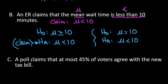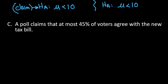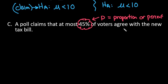Alright, so one last example. The last one talks about a poll claims that at most 45% of voters agree with the new tax bill. Okay, so anytime that you see a percentage or it says the proportion, the parameter for this one is the population proportion. So p is what we use for the proportion or percent of a population. So if it talks about the mean we use μ, if it talks about the percent or the proportion of something, then we will use p when we are setting up our hypothesis.